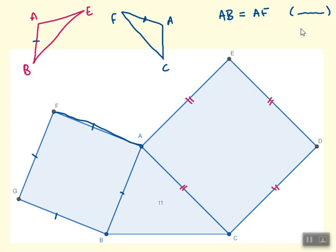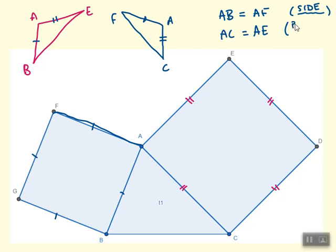Similarly, AC has two dashes and AE has two dashes, so AC equals AE because they're both part of the same square. That gives us another side. Now we have two sides that match — we need to think about whether side-angle-side or side-side-side applies. We don't know much about the angles yet, but this is where the clever bit comes in.